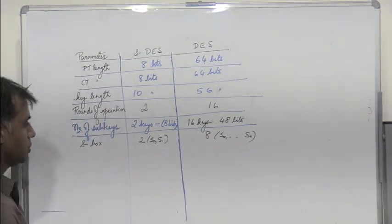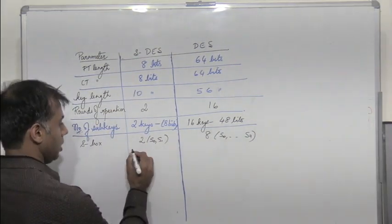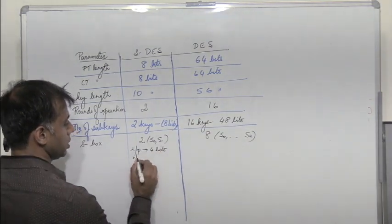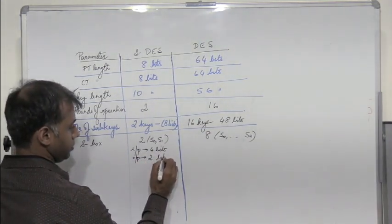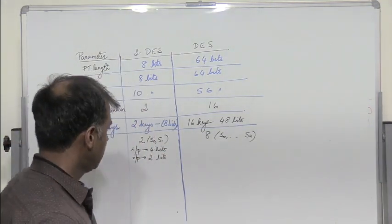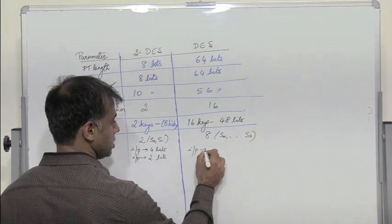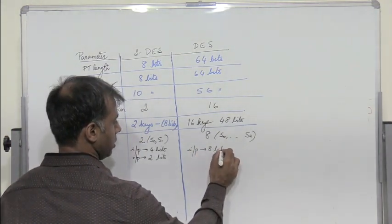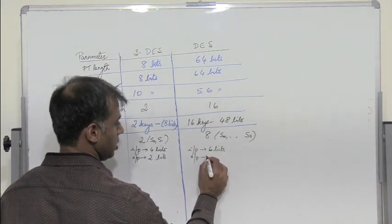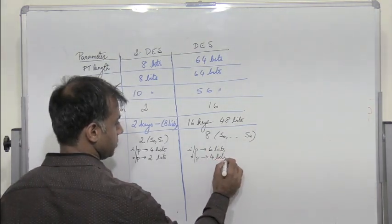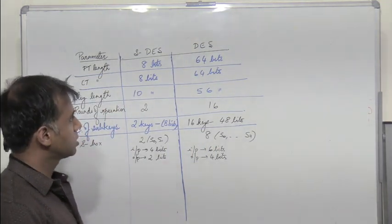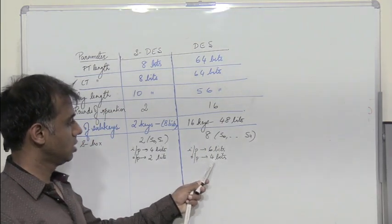S box input: input 4 bits, output 2 bits in S-DES. So input to each S box is 4 bits, output is 2 bits. Whereas in DES input to an S box is 6 bits and output is 4 bits. So input to an S box in DES is 6, output is 4.